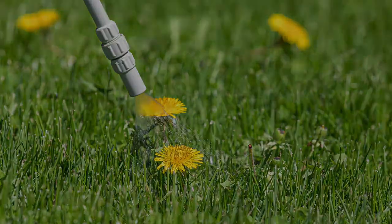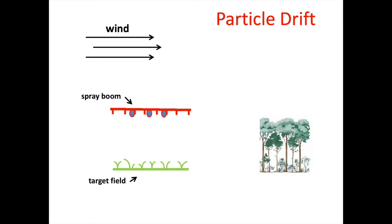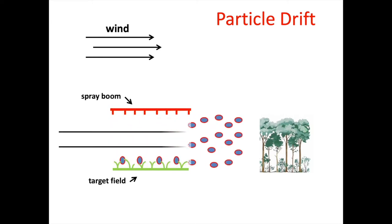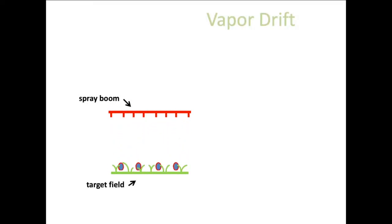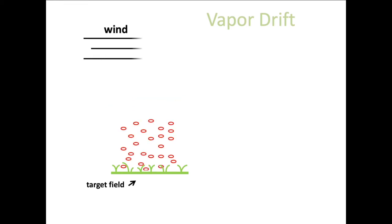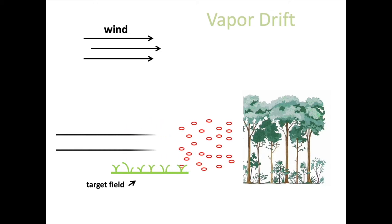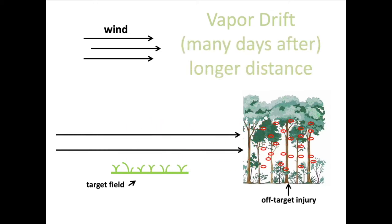These injuries can be the result of two types of drift. Particle drift, when wind carries away herbicide particles at the time of application, or vapor drift, which can occur many days after application when the applied herbicide vaporizes into the air and moves off-site, causing unintended and unacceptable harm to many species of sensitive broadleaf plants.